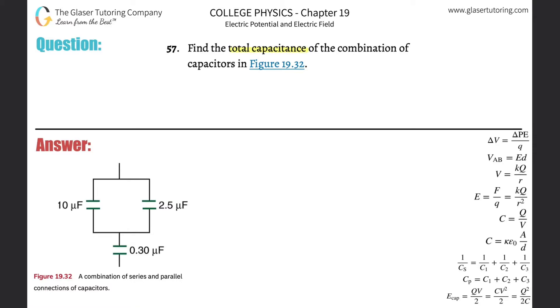Number 57, find the total capacitance of the combination of capacitors in figure 19.32. So here's figure 19.32. Okay, so we've got to find the total capacitance, or the equivalent capacitance we could call it.